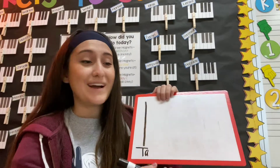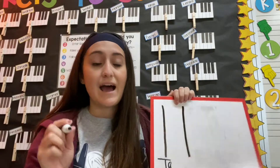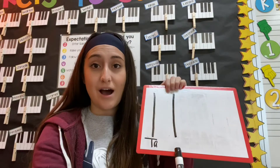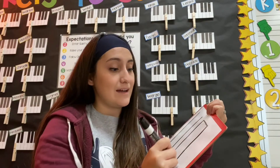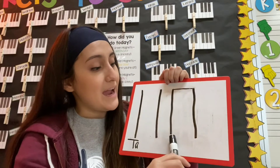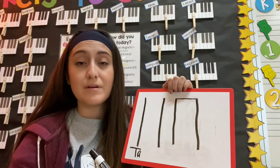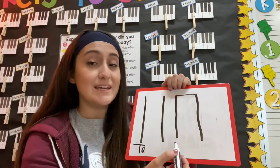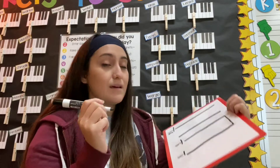I'm going to draw another line, so right now I have ta, ta. Now let me draw those connected lines — I have two lines that are connected right at the top. You say ti, ti.